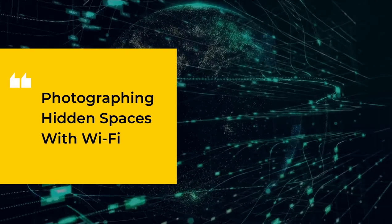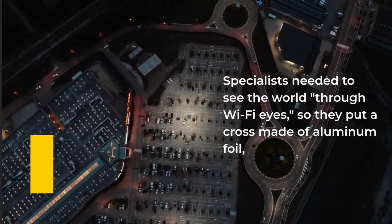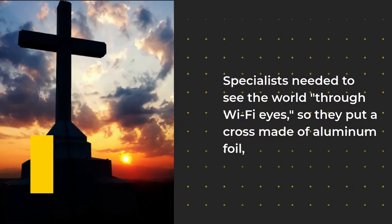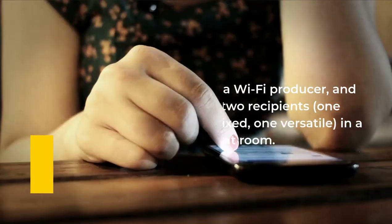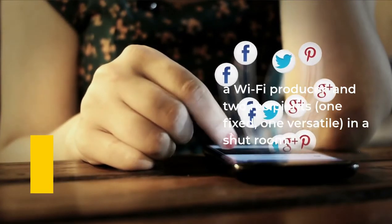10. Photographing Hidden Spaces With Wi-Fi. Specialists needed to see the world through Wi-Fi eyes, so they put a cross made of aluminum foil, a Wi-Fi transmitter, and two receivers – one fixed, one mobile – in a closed room.